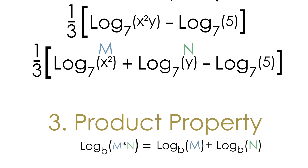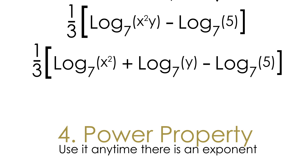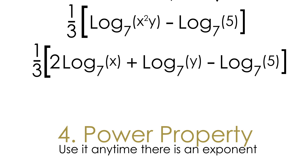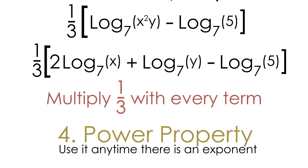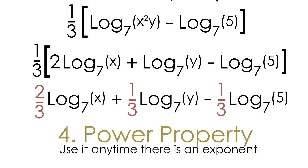We can expand this even more using the power property again. We have x squared, so we take that exponent of two and move it to the front. Then we multiply the one-third outside the parentheses by every term inside, giving us the fully expanded result: two-thirds times log base seven of x, plus one-third times log base seven of y, minus one-third times log base seven of five. And we have completely expanded our logarithm.